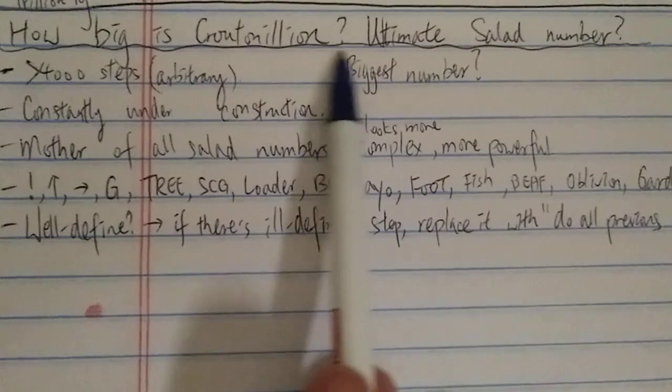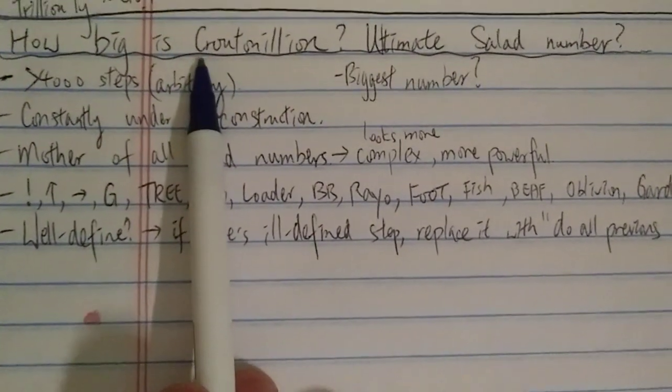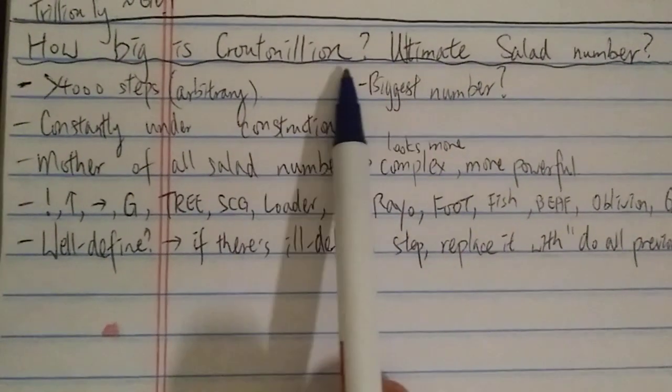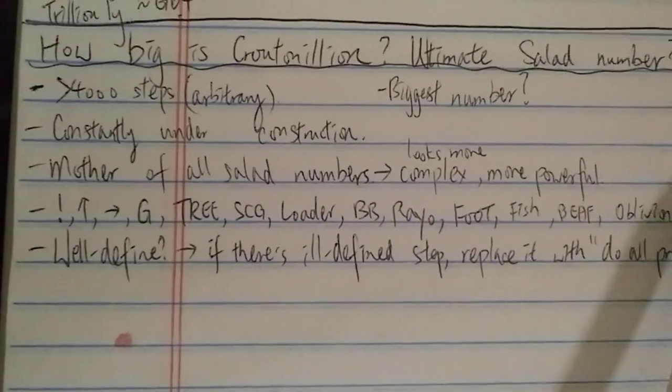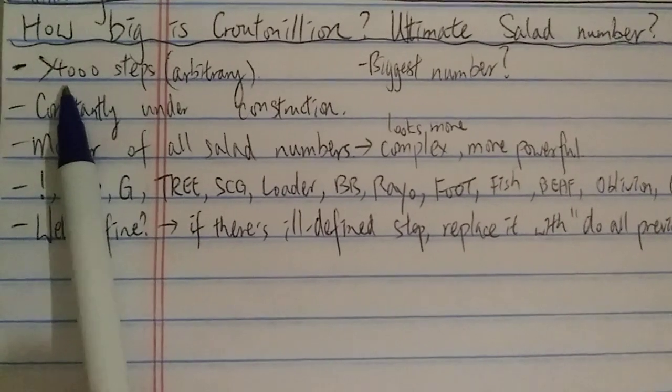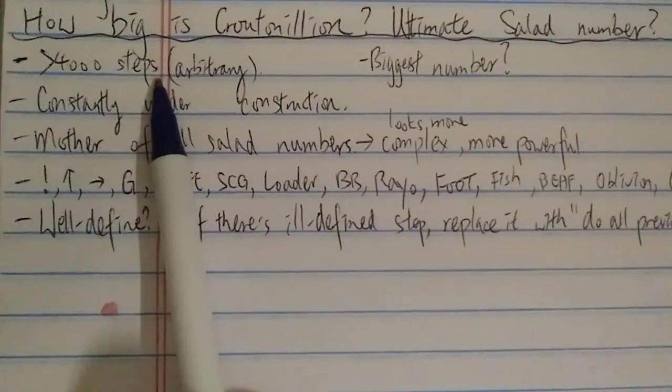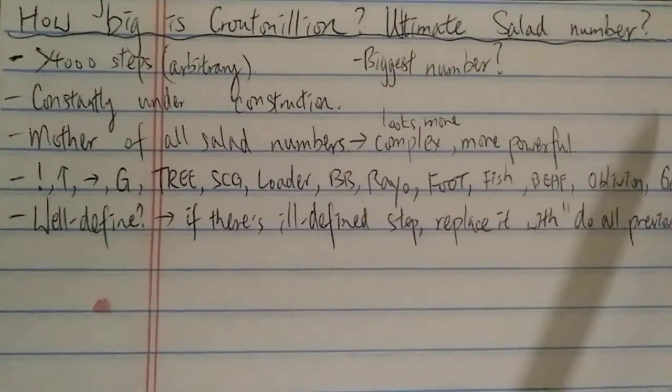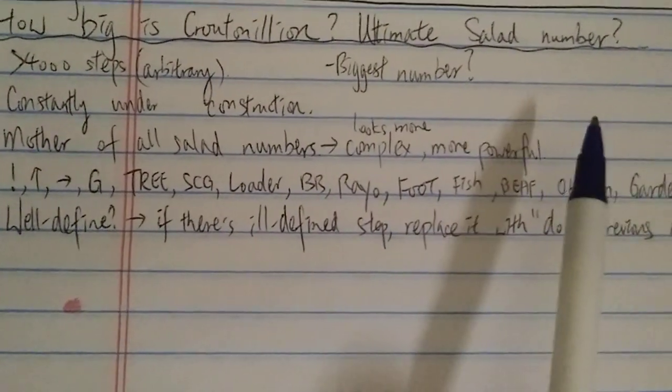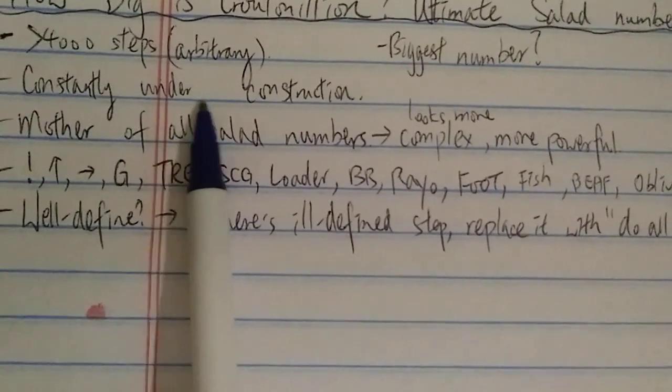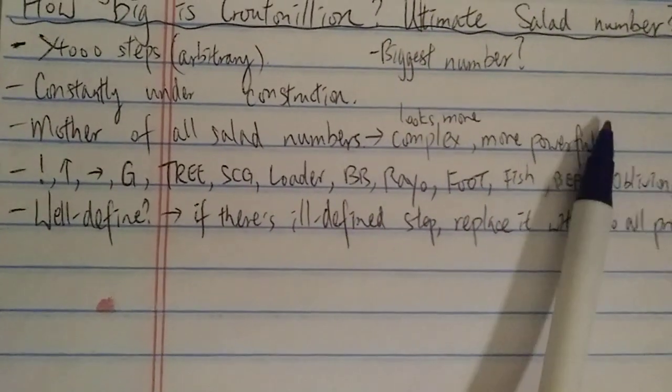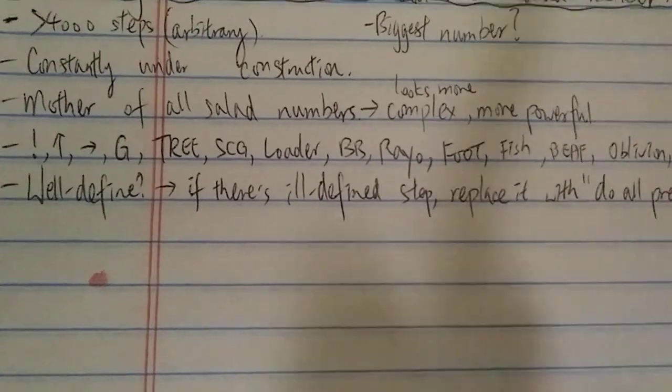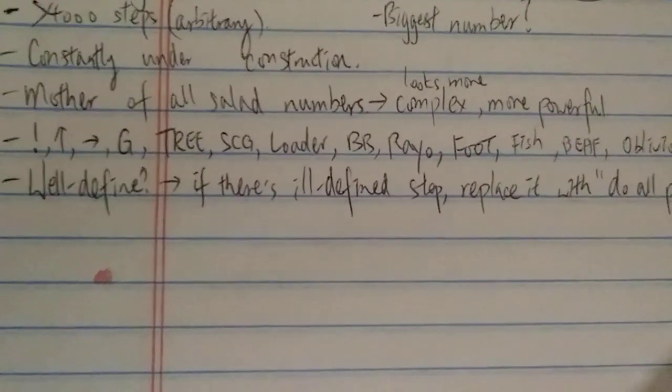But basically what is it and how big is it? Of course feel free to go to the Googleology wiki or Google it, look at the article about that yourself. Basically it composes of over 4,000 arbitrary steps, I think around 4,080 at the moment of this video, and it's constantly under construction so it's gonna keep getting bigger and bigger every day or depends on how often they update that page.